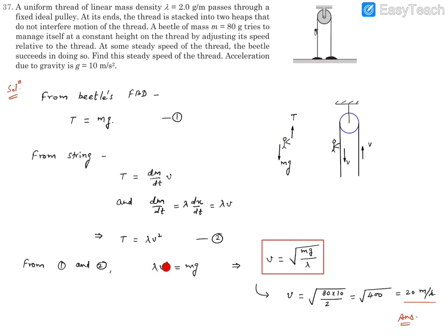Then you'll find lambda v squared is equal to mg. So v must be equal to square root of mg by lambda.